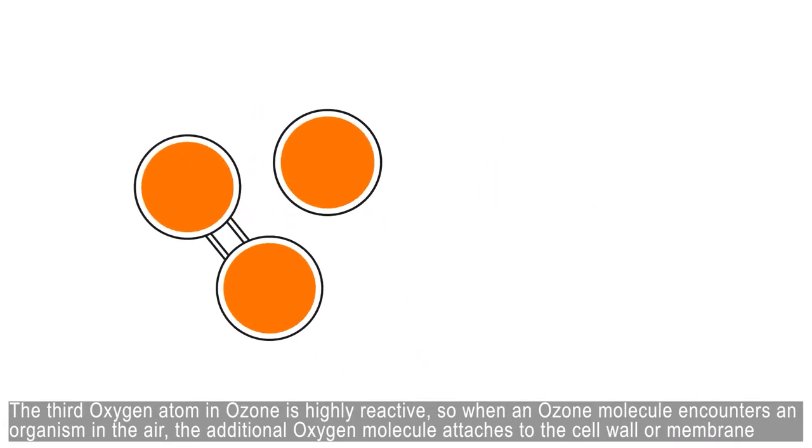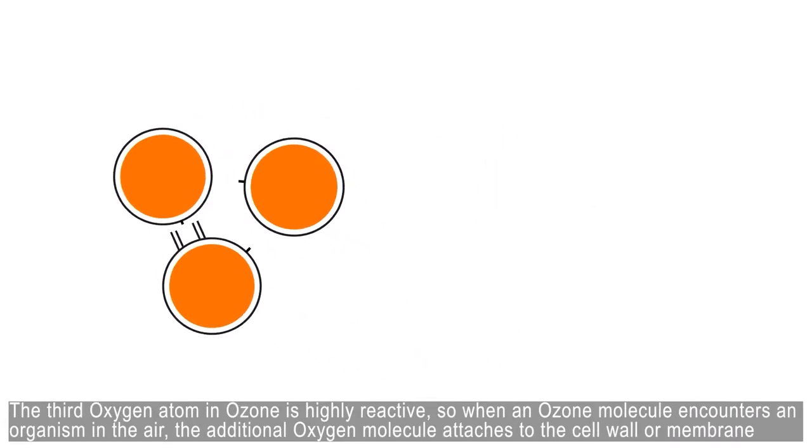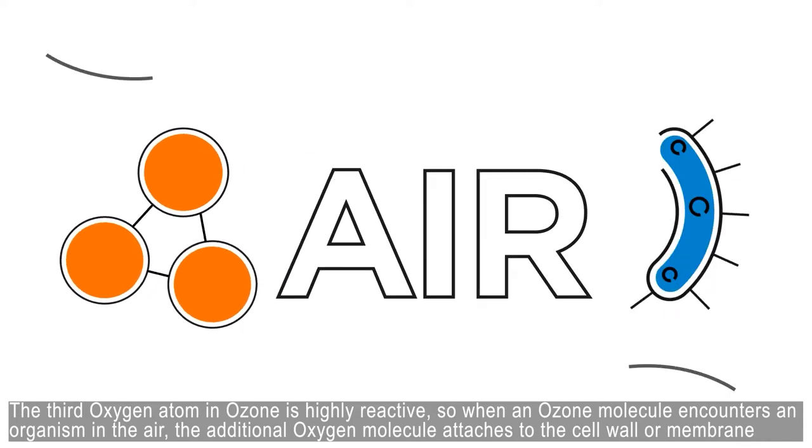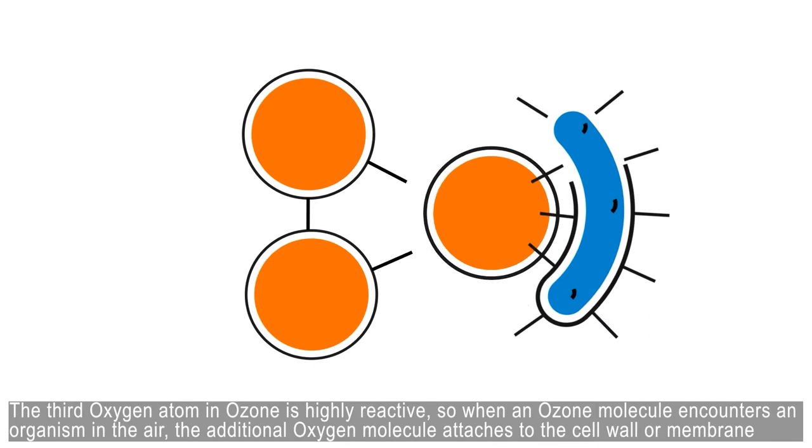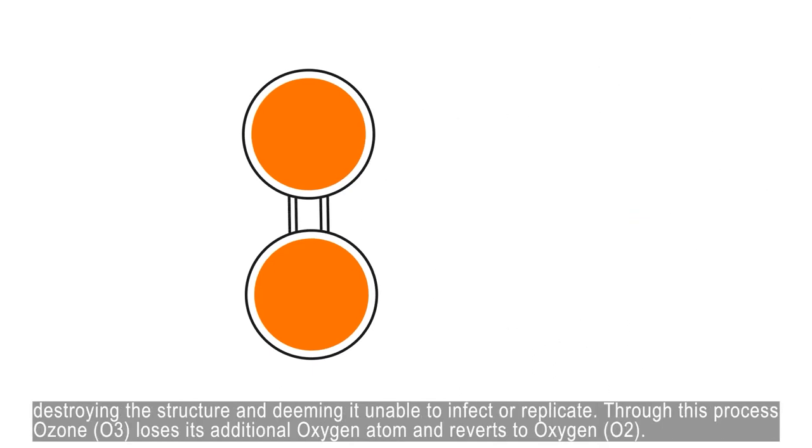The third oxygen atom in ozone is highly reactive, so when an ozone molecule encounters an organism in the air, the additional oxygen molecule attaches to the cell wall or membrane, destroying the structure and deeming it unable to infect or replicate.